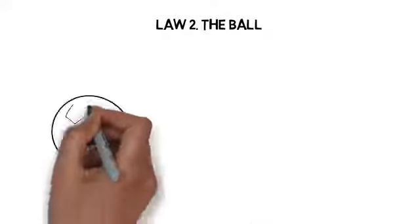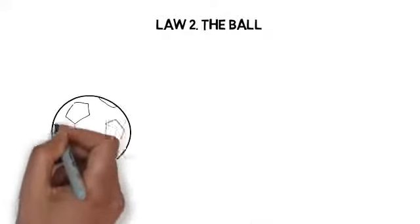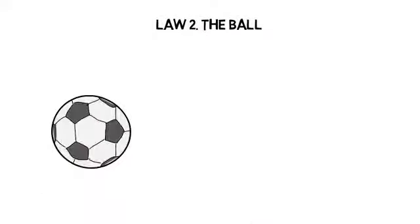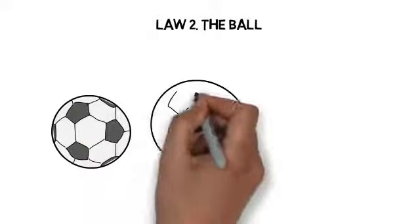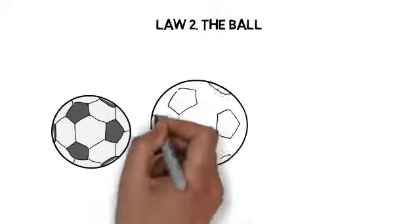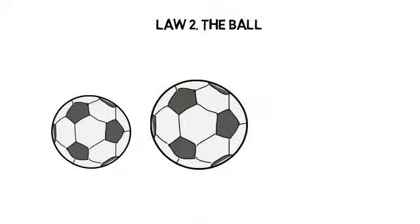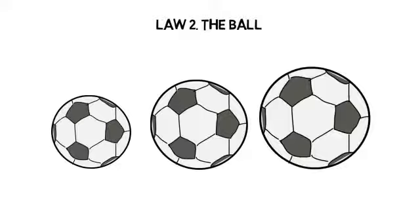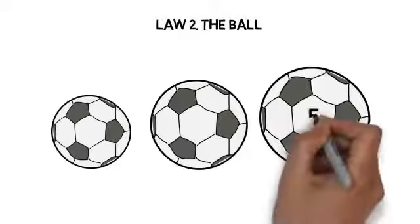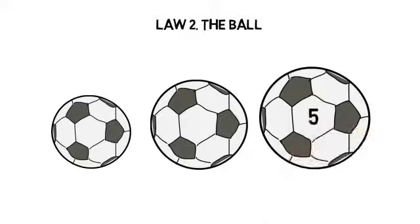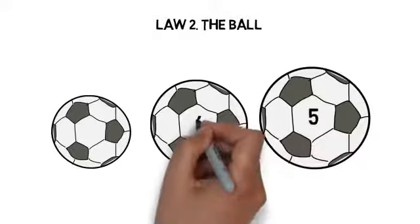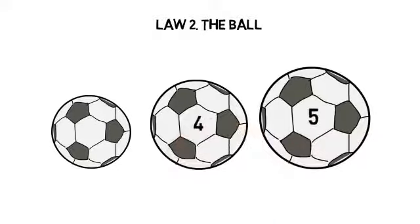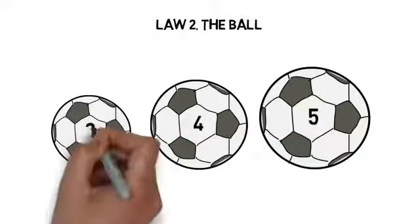Law 2: the ball. The ball comes in three general sizes: size 3, 4, and 5. Size 5 is the official size, while 4 and 3 are smaller sizes to accommodate younger players. There is no official rule on ball size for kids — leagues make the decision as to what size to play with.